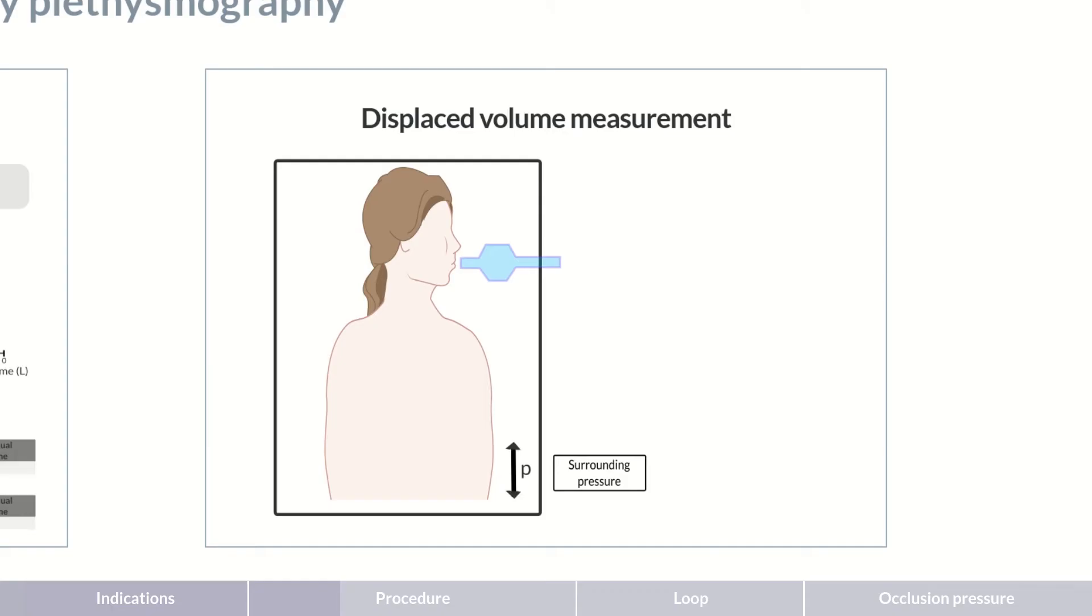A second pressure sensor is in the mouthpiece that can simultaneously measure pressure in the mouth and airflow. Let's first look at what the pressure sensor in the cabin measures.